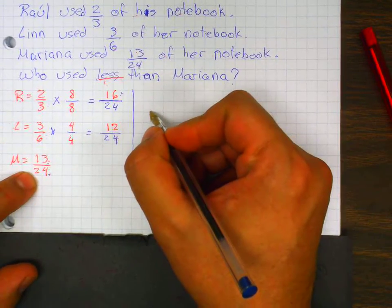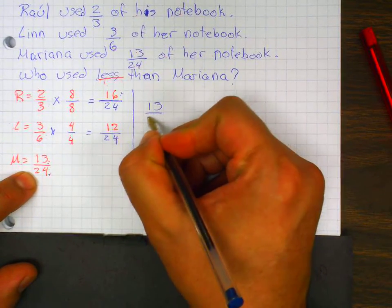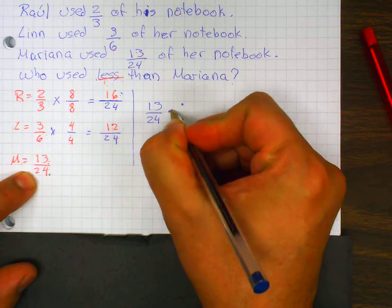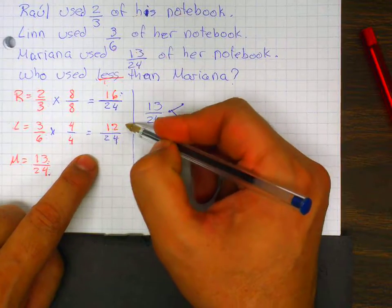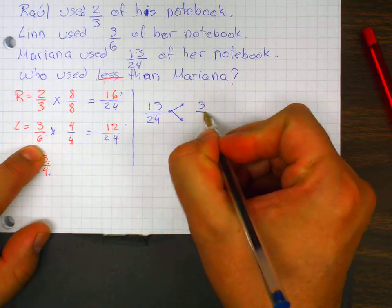So how do I write this? Twelve twenty-fourths is less than thirteen twenty-fourths. Now, I'm not going to use this. This is just as a reference. It's less than three-sixths.